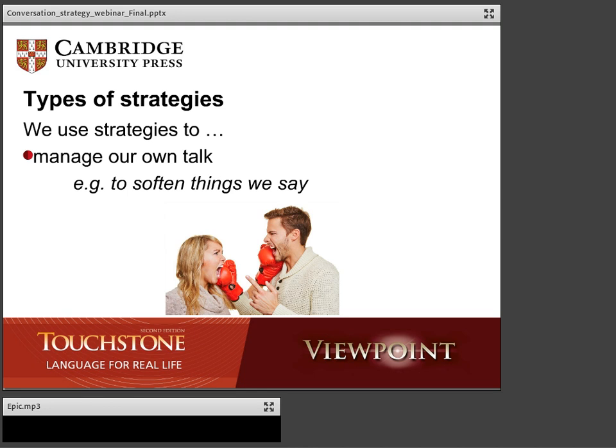Another type of strategy is to manage our own talk. For example, we might want to rephrase something to make a meaning clearer, or correct a mistake we made. There are ways and strategies we use to do that. We might also want to soften something we say — for instance, it's quite harsh to say 'you're insensitive,' but it's less confrontational to say 'you're being just a little, kind of insensitive in a way.' That's an example of a strategy for managing your own talk.